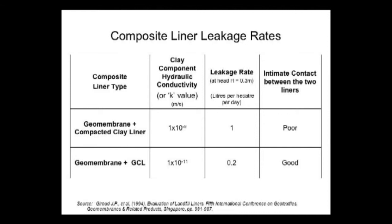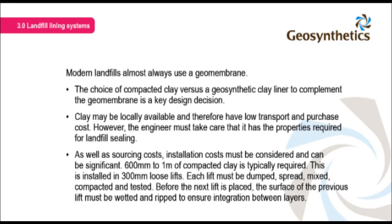This translates to a dramatically reduced leakage rate. If the geomembrane/compacted clay layer combination leaks at 1 litre per hectare per day, then the geomembrane/GCL combination leaks at only 0.2 litres per hectare per day. The more intimate the contact between the two layer components, the less opportunity there is for water seepage in between. Modern landfills almost always use a geomembrane.